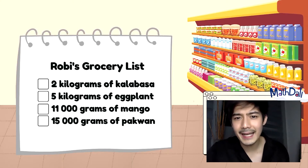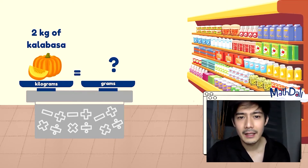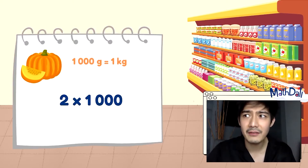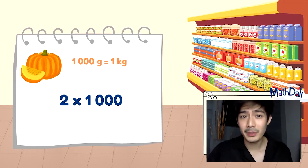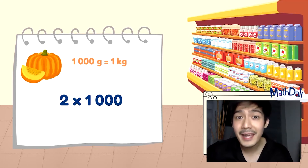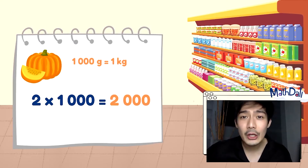Bawat bibili nating item ay may weight o timbang, at kailangan natin ibigay ang katumbas na weight in terms of grams or kilograms. Kung grams yung binigay, i-convert natin into kilograms. Kung kilograms yung binigay, i-convert natin into grams. Ang una nating kailangan: ang 2 kilograms of kalabasa — 2 kilograms of kalabasa is equal to ilang grams?